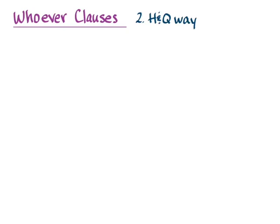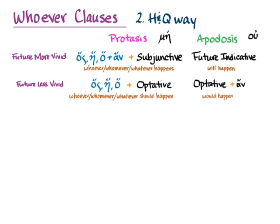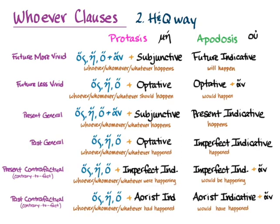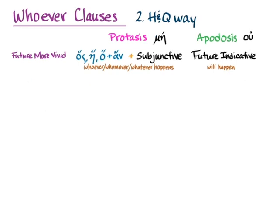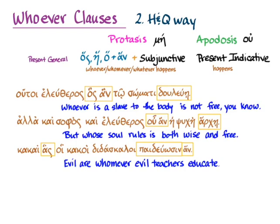Here we'll talk about Hanson and Quinn's way of explaining these clauses. They use the same logic that they use for conditional sentences, which you met in section 41 on their pages 93 to 98. You've been seeing that in action with hoss-an and the subjunctive, which matches up nicely with the future more vivid conditional. And if you make your way through the conditionals chart with the relative pronoun instead of ei or ean, you'll see that hoss-an and the subjunctive pattern also matches nicely with present general. But you can do the same sort of indefinite clause in place of any of the if-clauses of the conditional sentences you've already learned. So here's what you've seen so far, starting with the excerpt from the Hippocratic Oath, which Hanson and Quinn would match out to future more vivid.